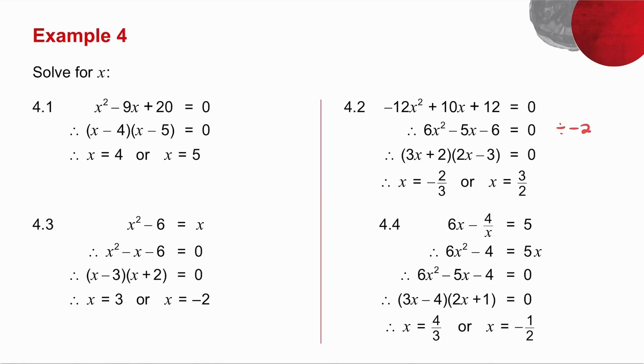Question number 4.3. I need to take the x across, and I need to write it in standard form. So write it in the form ax squared plus bx plus c equals 0. Factorize the trinomial, and I get my two solutions.